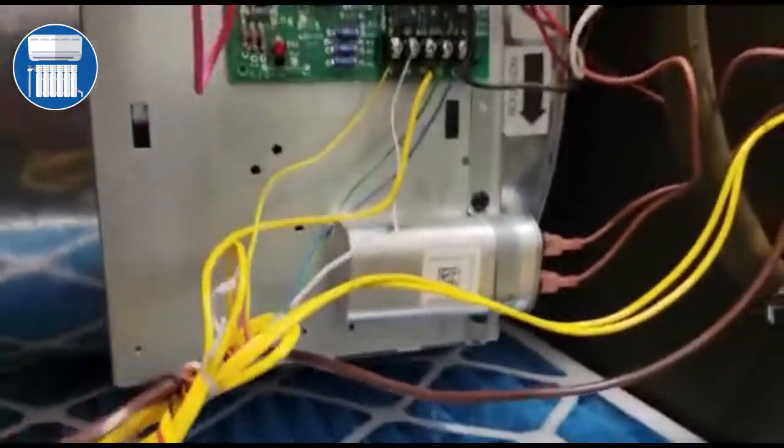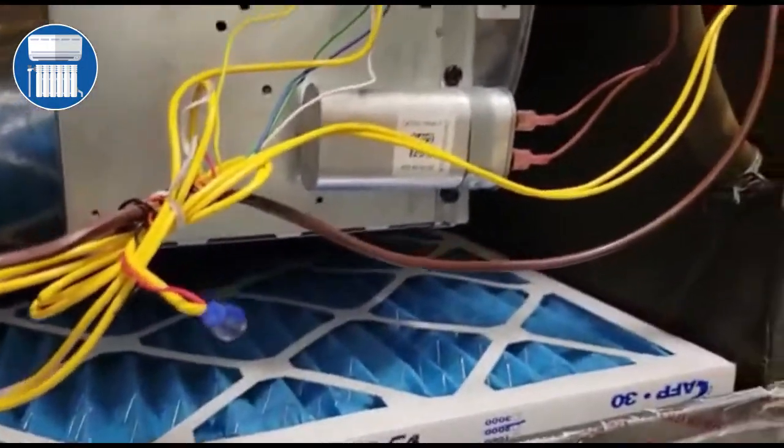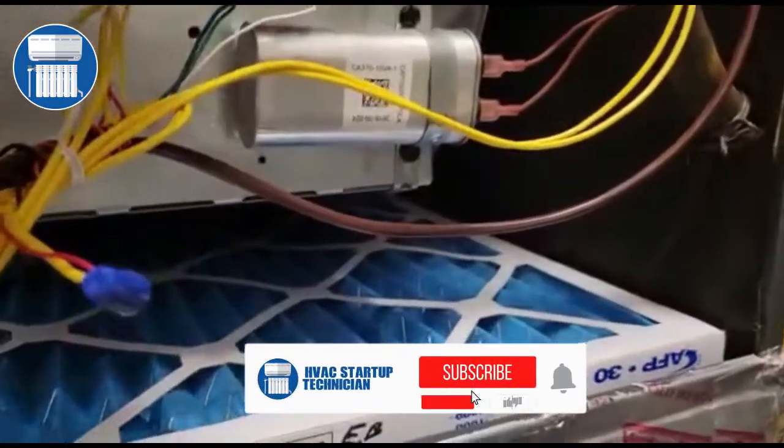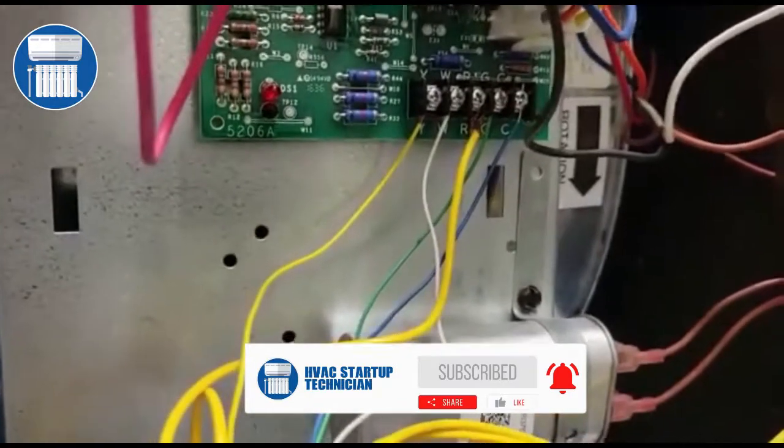And guys, that's how you connect a float switch or a condensate pump. You make sure you have power going around - one end goes to the R terminal here and the other end goes to your red line that you connect from your thermostat.